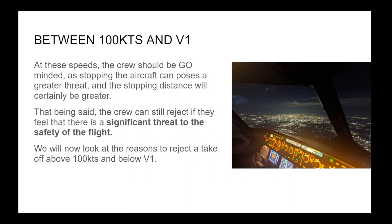Between 100 knots and V1, the crew should be go-minded, as stopping the aircraft poses a greater threat and the stopping distance will certainly be greater. That being said, the crew can still reject if they feel there is a significant threat to the safety of the flight.